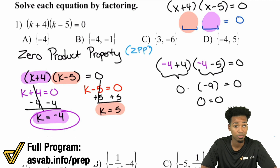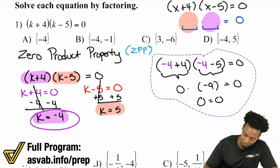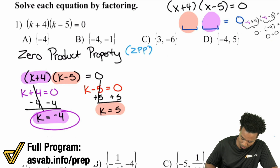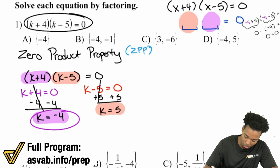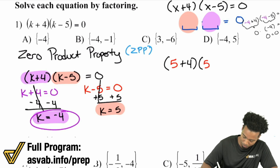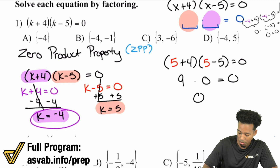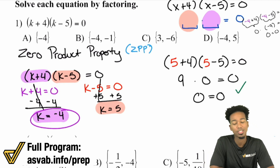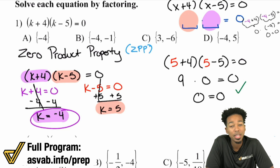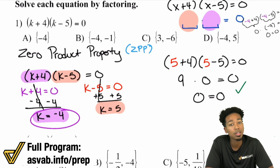And now, if you turn around and plug in positive five, it'll still work just the same. Watch this. Plugging in positive five: five plus four, times five minus five, equals zero. Five plus four is going to be nine. Five minus five is going to be zero. And then nine times zero is just going to be zero. It works just as well. So those are both answers — negative four and positive five — and both make the equation true.